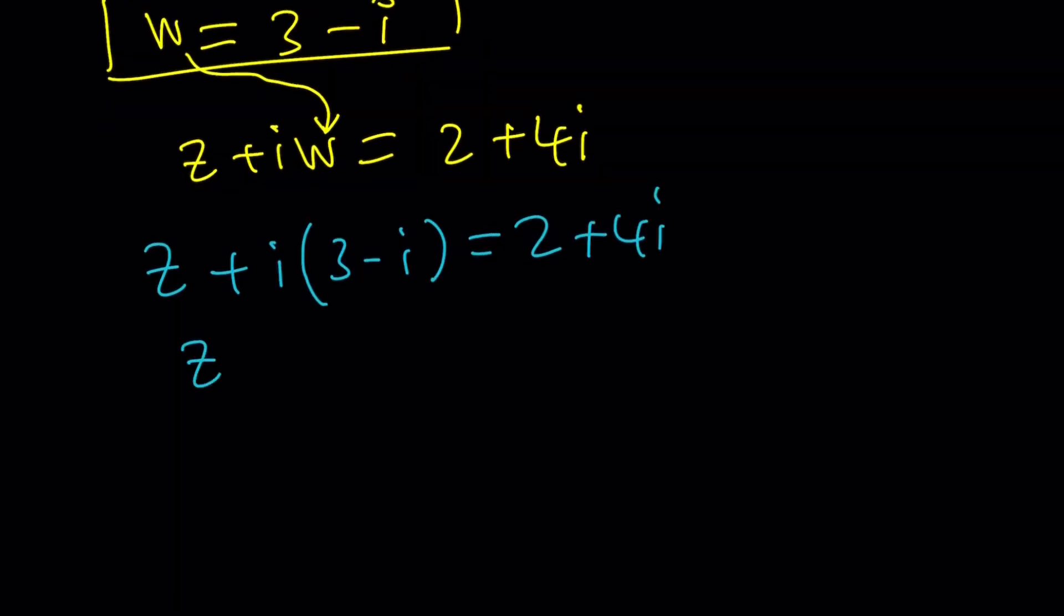Z plus I times 3 minus I equals 2 plus 4I. And then if you simplify this, again, like before, I times 3 is 3I. So many times we're getting the same thing. Negative I squared, which is positive 1, equals 2 plus 4I.